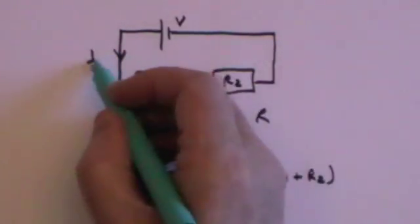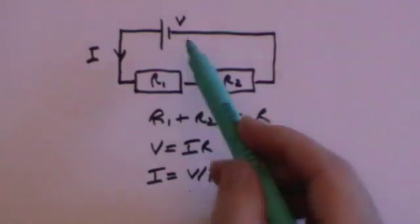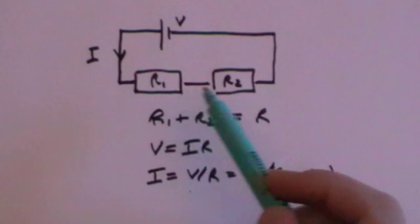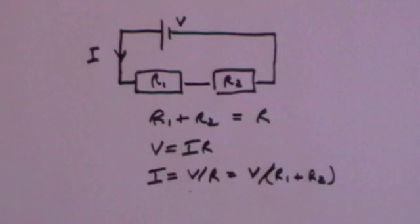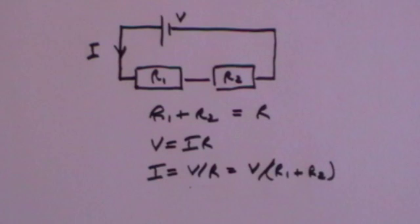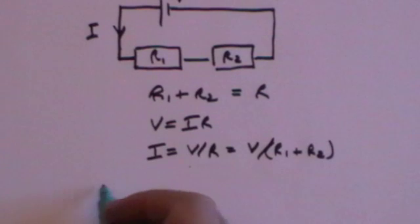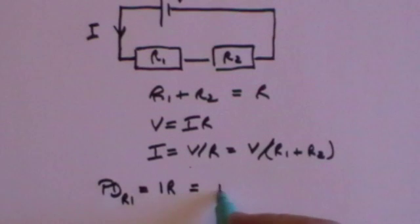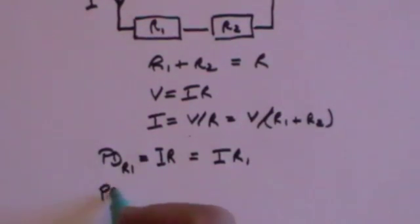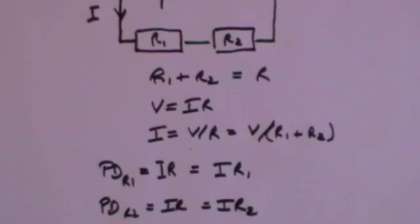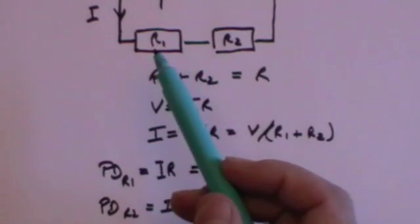That gives you the current flowing in the circuit. We also said that this voltage — also called potential difference — is dropped across each of the resistors, and the voltage drop or potential drop across each resistor is the current going through that resistor times the value of the resistance. In other words, it's Ohm's law: the potential drop across R1 is equal to IR1, and the potential drop across R2 is IR2. So the potential drop across an individual resistance is simply the current multiplied by the value of that resistance.